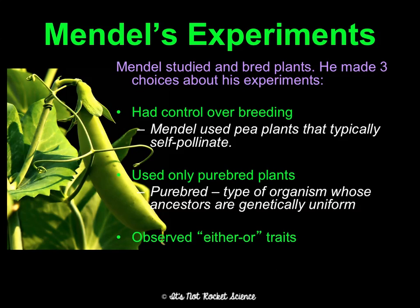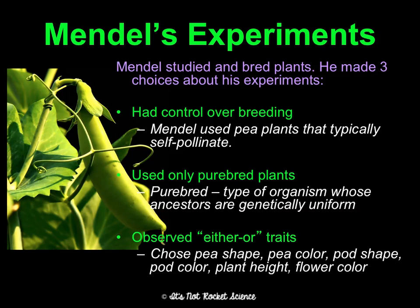He also only looked at either/or traits — traits that only have two options. For example, pea shape: peas are either wrinkled or round. Pea color: either green or yellow. Plant height: either tall or dwarf. Flowers: either purple or white. These are the kinds of traits where there are only two options.